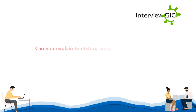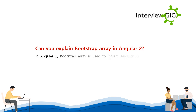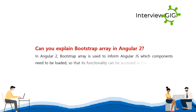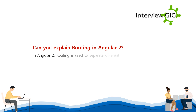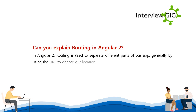Can you explain the bootstrap array in Angular 2? The bootstrap array is used to inform Angular which components need to be loaded so that their functionality can be accessed in the application. Can you explain routing in Angular 2? In Angular 2, routing is used to separate different parts of our app, generally by using the URL to denote our location.